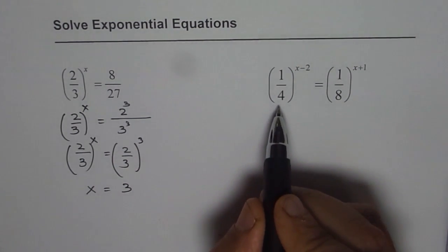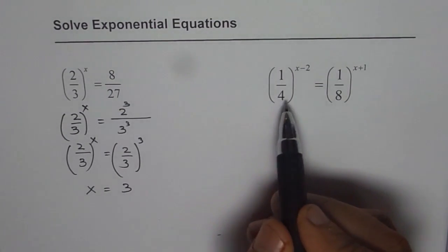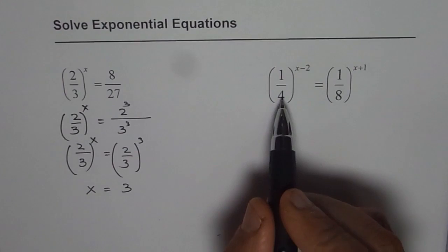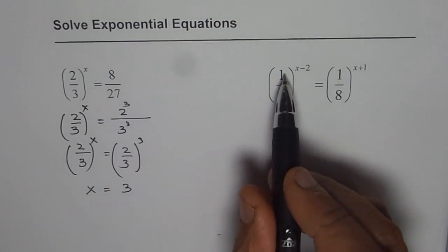Now, here is kind of tricky. We have 1 over 4 and 1 over 8. Now, we know what is 4. 4 is 2 squared.